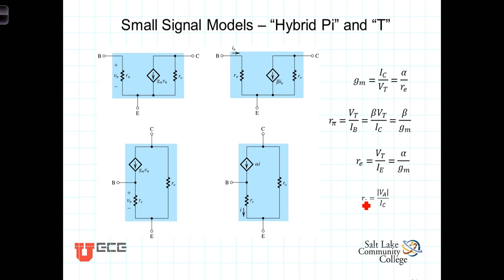We're now ready to construct the small signal models. And you'll notice that these are very much like those models that we derived for the MOSFET transistors, with a few significant differences. First of all, the hybrid pi model, where we've got the base, emitter, and collector.